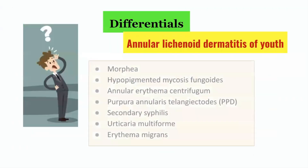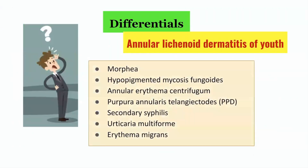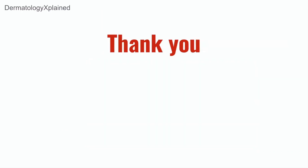The differential diagnosis of Annular Lichenoid Dermatitis of Youth includes morphea, hypopigmented mycosis fungoides, annular erythema centrifugum, purpura annularis telangiectodes, secondary syphilis, urticaria multiforme, and erythema migrans. Thank you for joining us. We hope to see you next time.